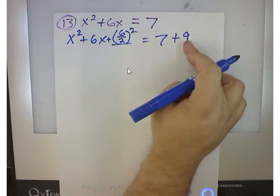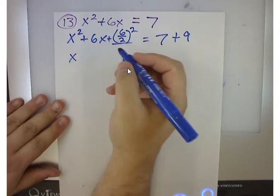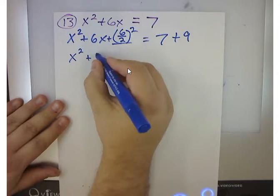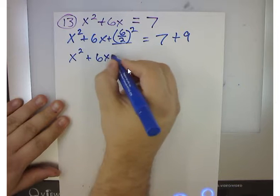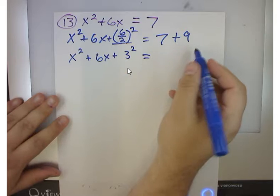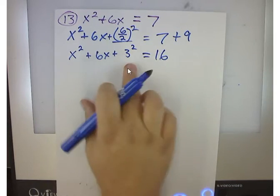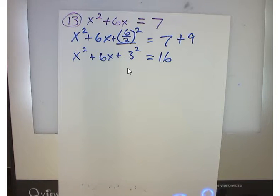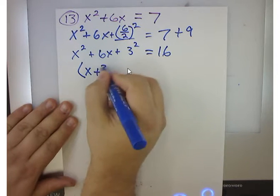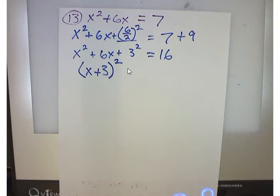I'm going to clean this up a little bit so you guys can see what I'm doing. I'm really saying x squared plus 6x plus 3 squared is equal to 7 plus 9, which is 16. Now, this is what we call a perfect square. This is the exact same as x plus 3 squared. You guys with me so far?